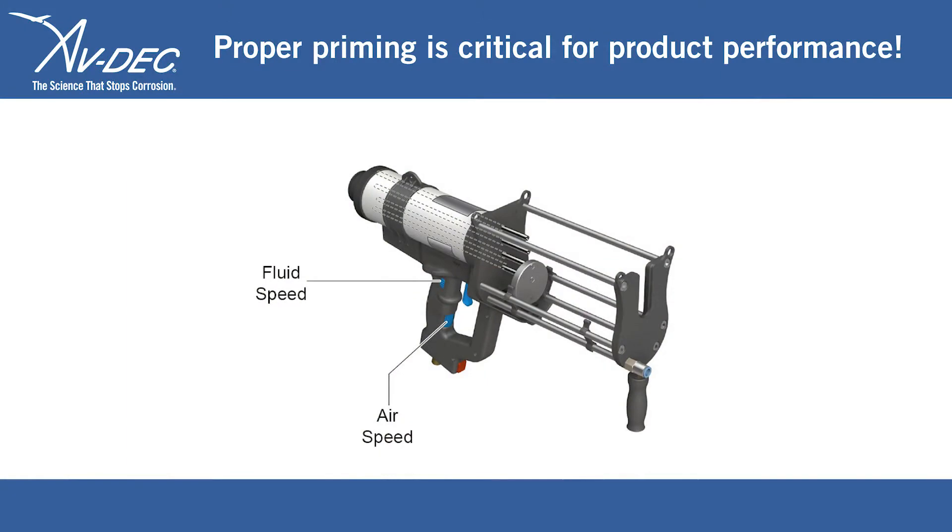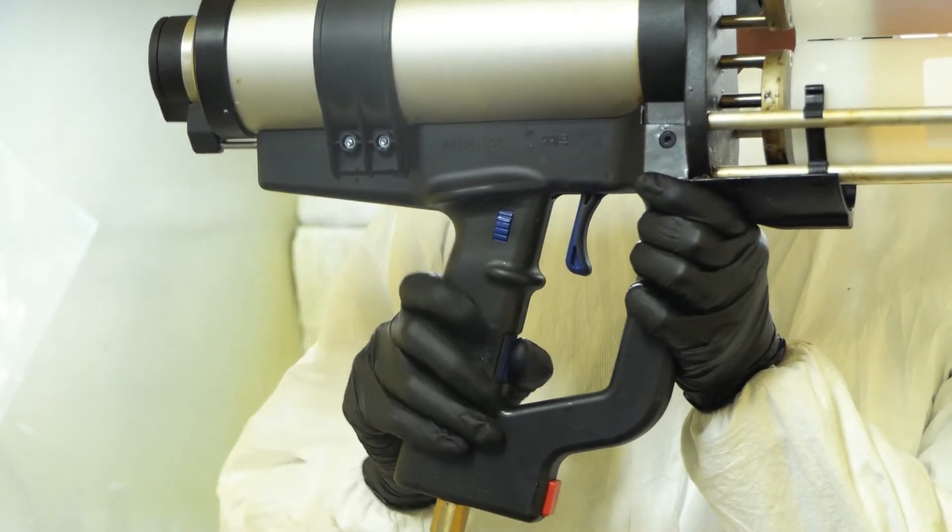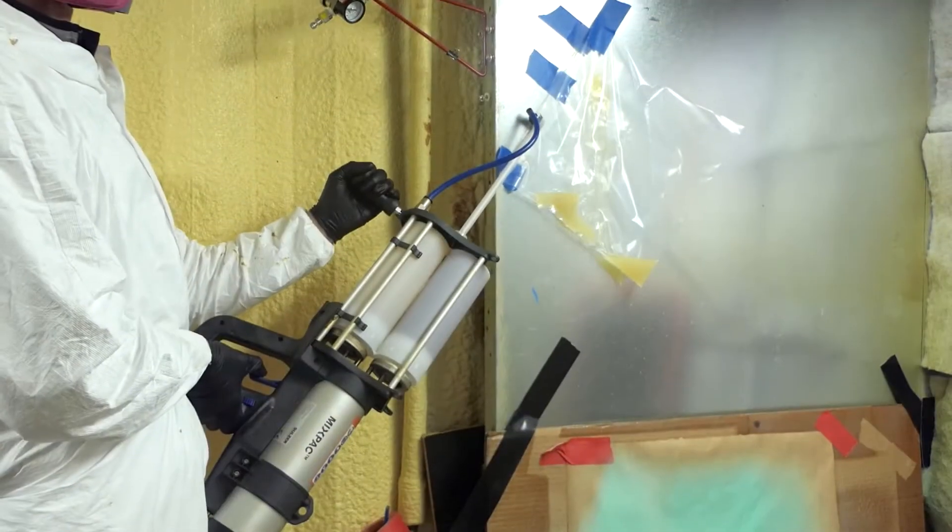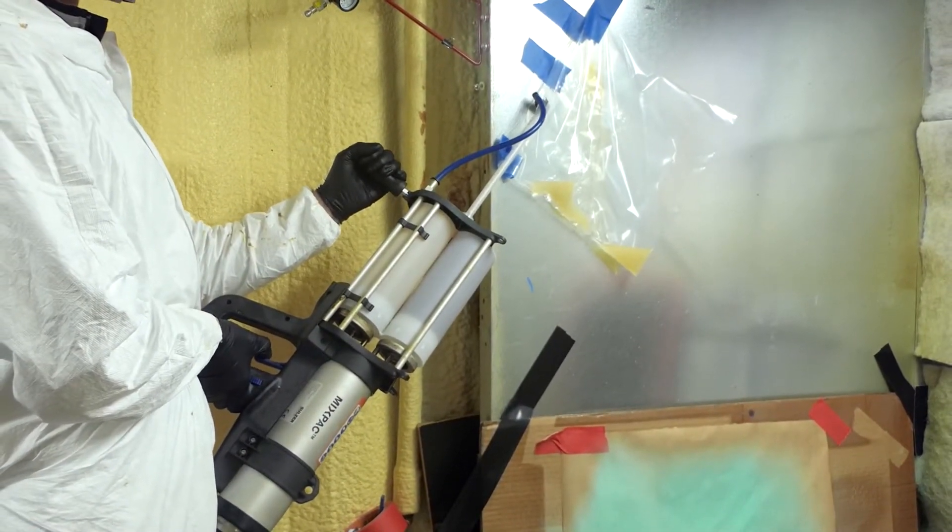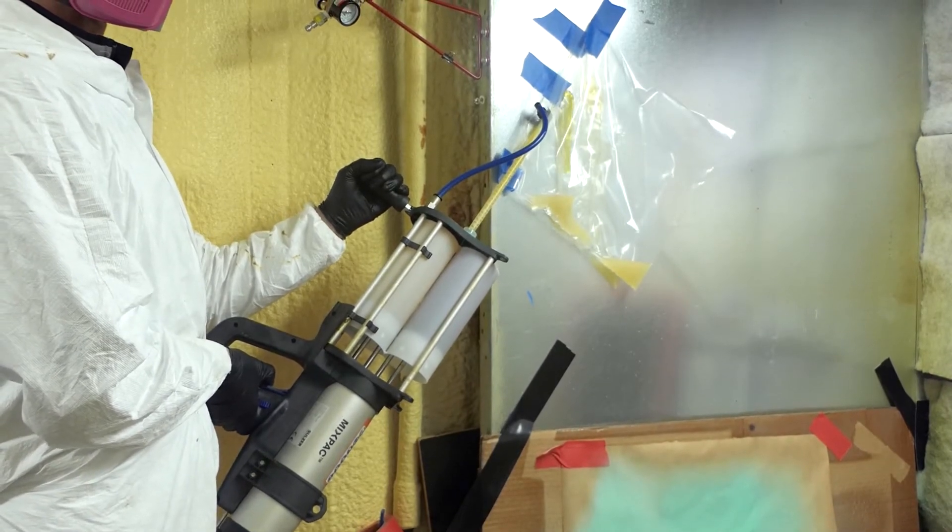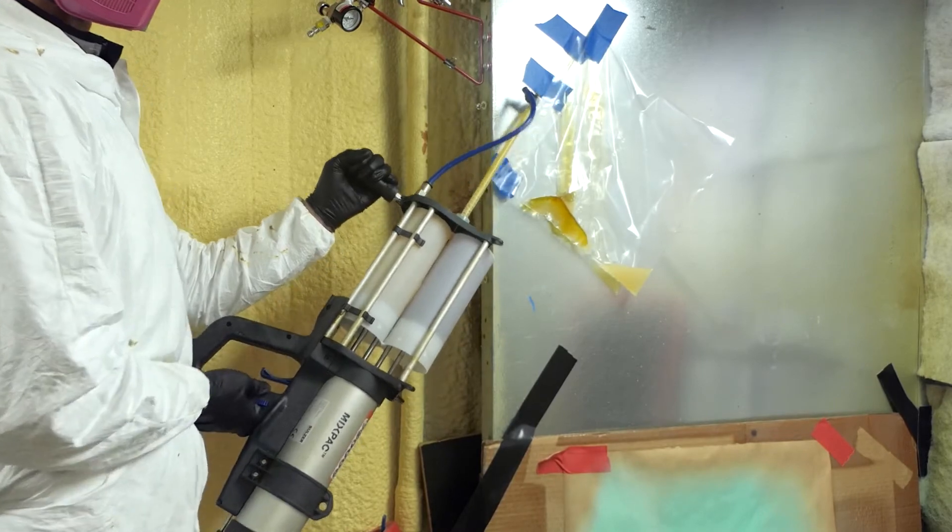Proper priming is critical for product performance. Set the fluid level to 5. Set the air level to the lowest setting. Over a suitable waste container, with mixing straw pointing upward at a 45 degree angle, and resin side over hardener side, prime mixing element by dispensing 3 seconds of sealant to remove air bubbles from the cartridge.